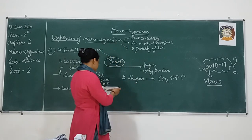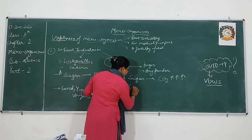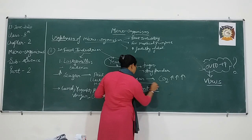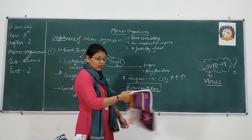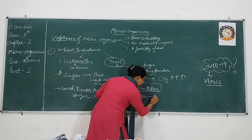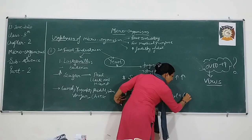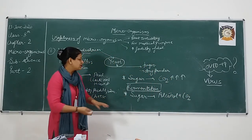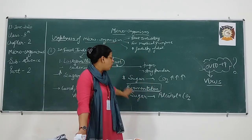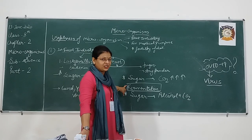Now the next topic is the fermentation process. What is fermentation? Fermentation is the conversion of sugar present in a substance to alcohol and carbon dioxide. This is the process known as fermentation. Wines, vinegar, and pickles are all produced by this process — fermentation.